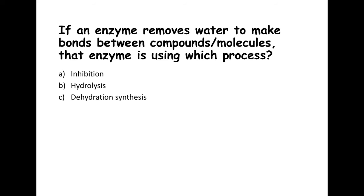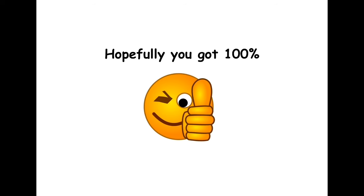Last question: if an enzyme removes water to make bonds between molecules, which process is it using — inhibition, hydrolysis, or dehydration synthesis? Hopefully you picked dehydration synthesis, because you're removing water to make larger molecules and form bonds. If you didn't get a hundred percent on the quiz, please go back and review the video — these are essential concepts for biology, anatomy, physiology, microbiology, and any life-science class. Let me know how you did until next time, bye!